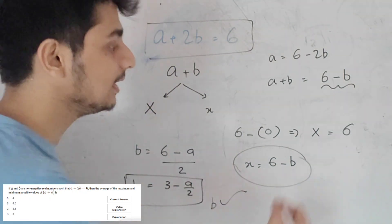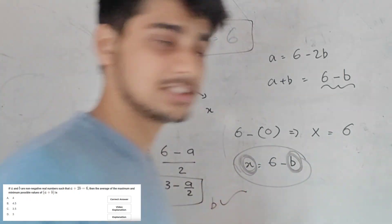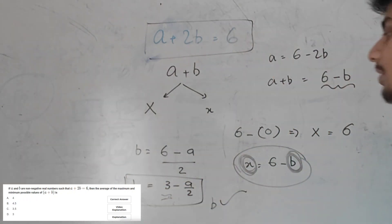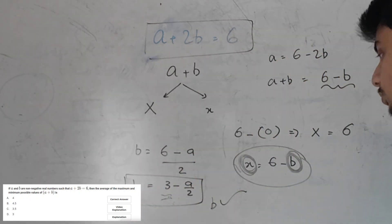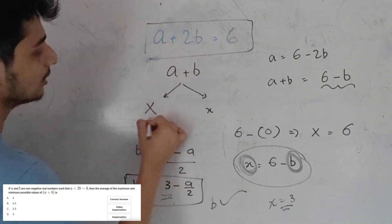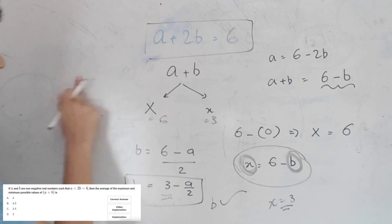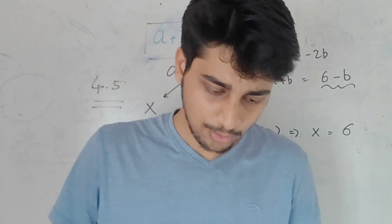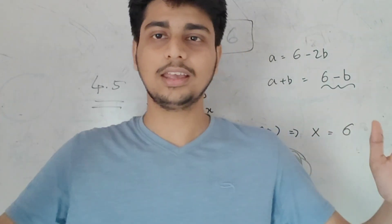Here we have: when B equals 3, A equals 0 — so A plus B equals 3, which is the minimum. When A equals 6, B equals 0 — so A plus B equals 6, the maximum. The average is 6 plus 3 by 2, which equals 9 by 2, giving 4.5. The answer is Option D. If you have a clear mind, you can answer all the math questions in this CAT exam.